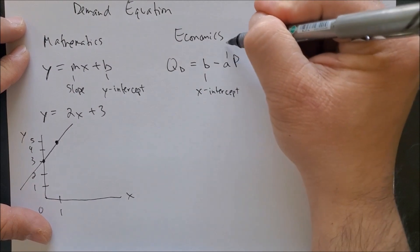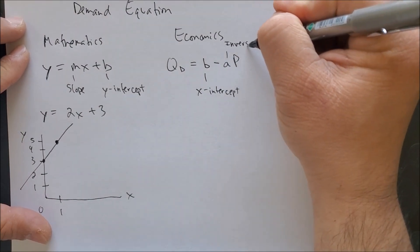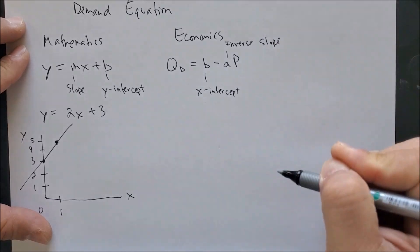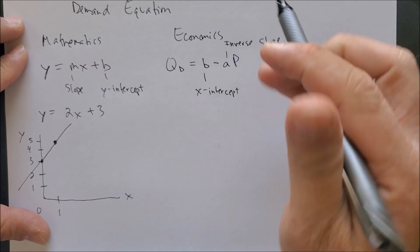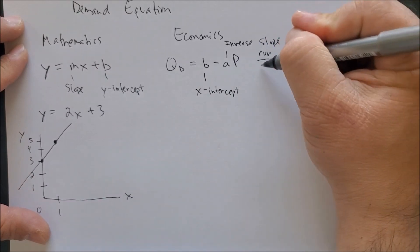And we have a, which represents the inverse slope. If the slope is rise over run, the inverse slope is run over rise.